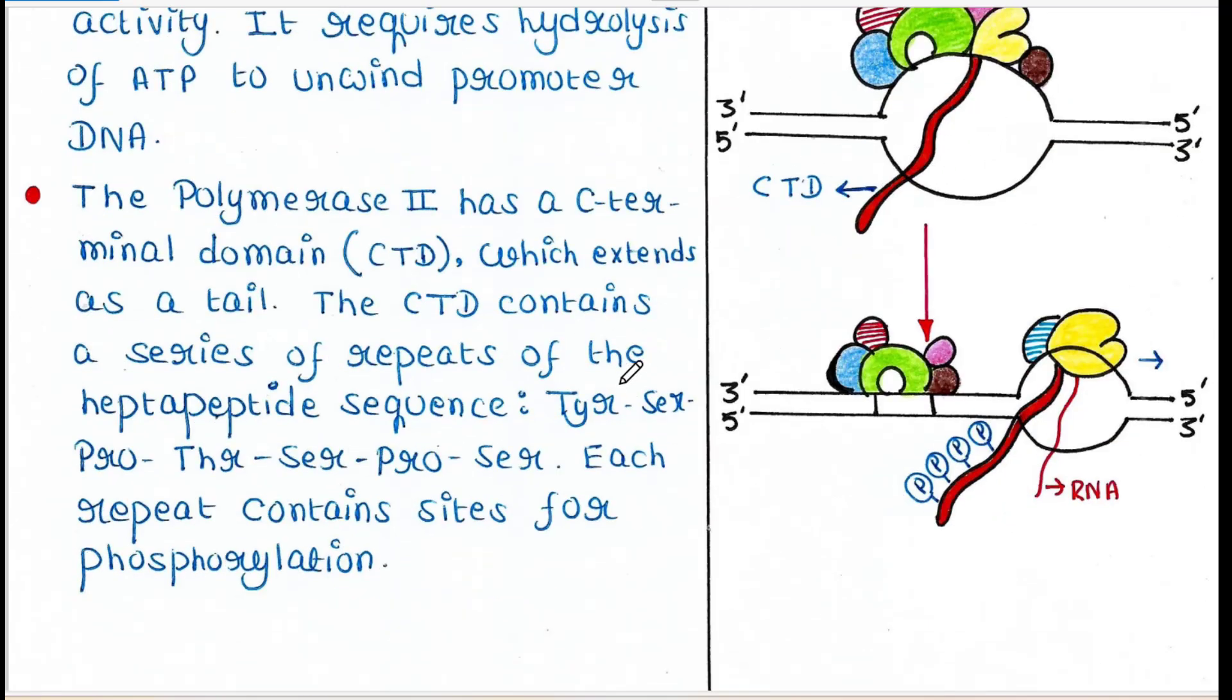The seven amino acids are tyrosine, serine, proline, threonine, serine, proline, serine. Each repeat contains sites for phosphorylation.